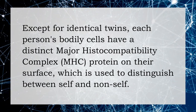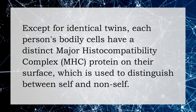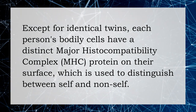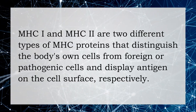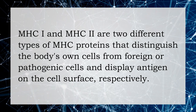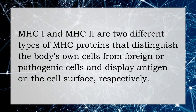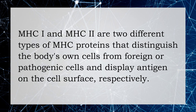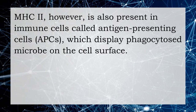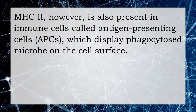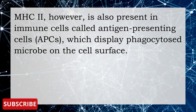Except for identical twins, each person's bodily cells have a distinct major histocompatibility complex (MHC) protein on their surface, which is used to distinguish between self and non-self. MHC1 and MHC2 are two different types of MHC proteins: MHC1 distinguishes the body's own cells from foreign or pathogenic cells, while MHC2 displays antigen on the cell surface and is also present in antigen presenting cells, which display phagocytosed microbes on the cell surface.